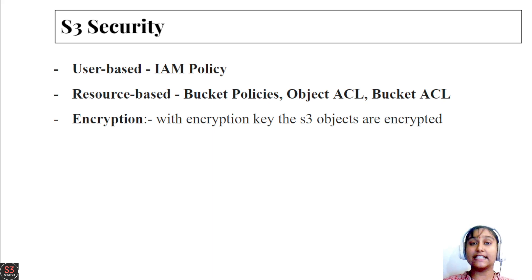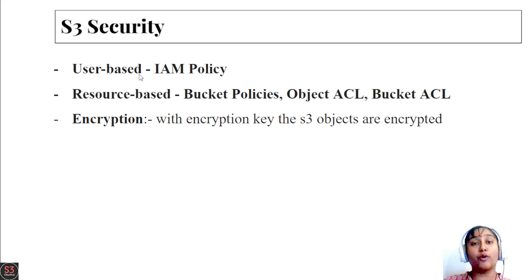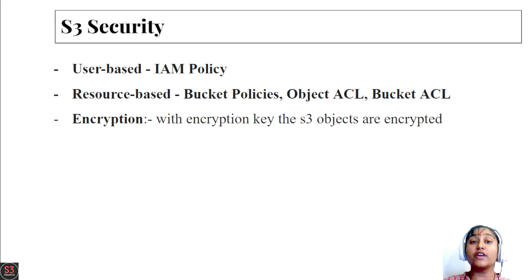Before starting, let's talk about S3 security first. We have two types of security in S3: user-based security and resource-based security. In user-based security, we create an IAM policy, which provides permissions to a particular user to access particular things. If you want to provide resource-based security, you can create bucket policies.